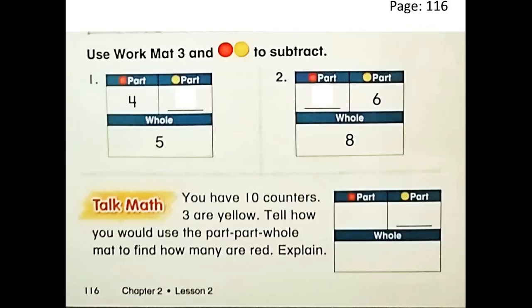Great, grade 1! Let's see the next practice. In this table, the whole is 5. If the first part is 4, what do you think about the second part? If you have 5 counters in all and you have 4 red counters, how many yellow counters should you have? We will subtract 4 from 5: 5 minus 4 equals 1.